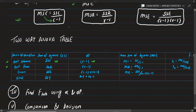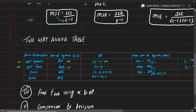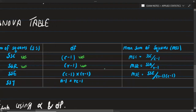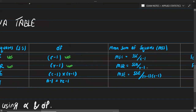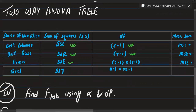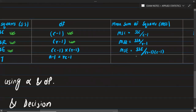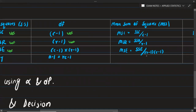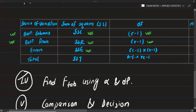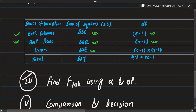F_r equals MSR upon MSE. For the error term, SSE is used with degrees of freedom C minus 1 into R minus 1. MSE equals SSE upon R minus 1 into C minus 1. The total sum of squares has degrees of freedom N minus 1, which equals RC minus 1.